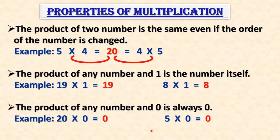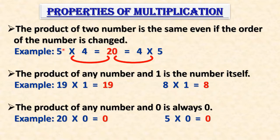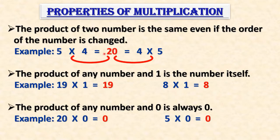Now, properties of multiplication. First point: the product of two numbers is the same even if the order of the numbers is changed. For example, 5 multiplied by 4 and 4 multiplied by 5 — I have just interchanged the place of the numbers, but the answer is the same. So the product remains the same even if the order of the numbers is changed.